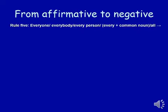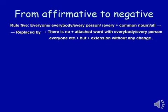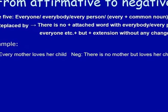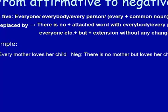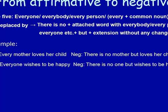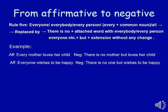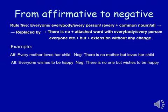Rule number five: 'everyone,' 'everybody,' 'every person,' or 'every' plus a common noun is replaced by 'there is no' plus the noun, and 'but' is added. For example: 'Every mother loves her child' becomes 'There is no mother but loves her child.' Another example: 'Everyone wishes to be happy' becomes 'There is no one but wishes to be happy.' The rest of the sentence remains without any change.